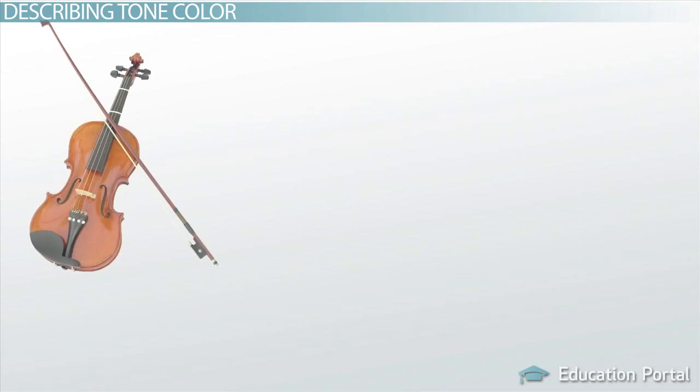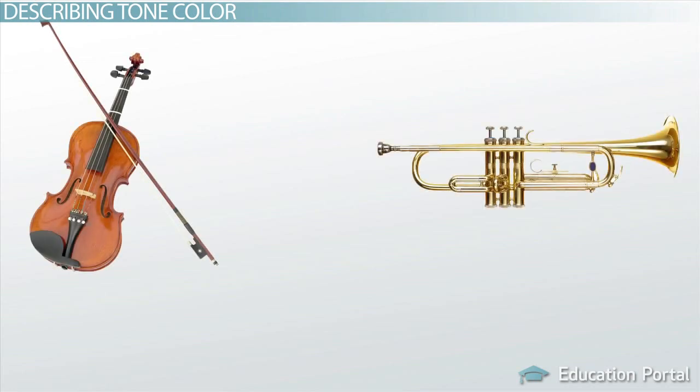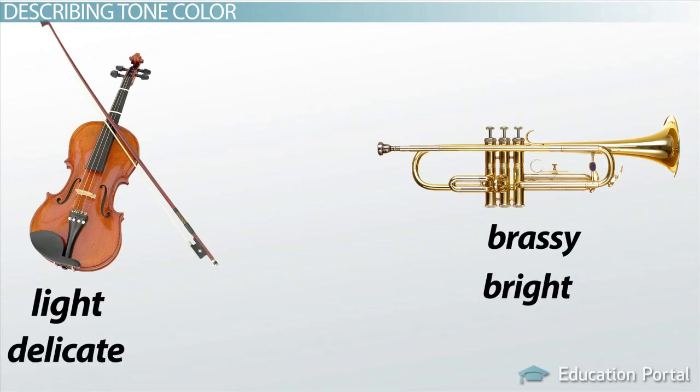Instruments in the orchestra can be described the same way. When we hear a violin, the timbre is different from that of a trumpet. We might say that the trumpet sounds brassy or bright, where the violin could be described as light and delicate.